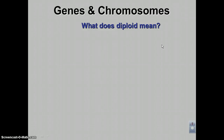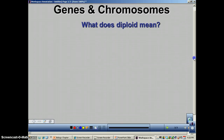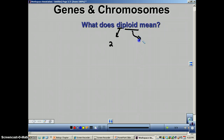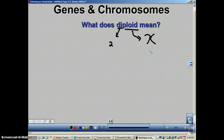In podcast number 2 from chapter 11, we're going to learn the difference between diploid and haploid. Like most words in science, they're trying to tell you what's going on. The 'di' refers to two, and the 'ploid' part refers to chromosomes — this is my little symbol for chromosomes because I'm too lazy to write out the word. So basically, diploid means you have two of each kind of chromosome.